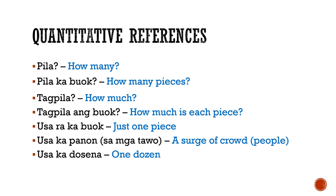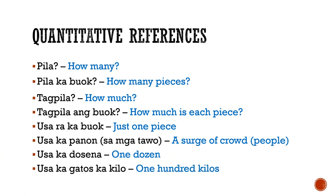'Usaka dosena' — usa is one, and dozen is simply translated to dosena. 'Usaka gatos ka kilo' means one hundred kilos — gatos means hundred. You also hear libo, which means thousand — so usaka libo ka kilo means one thousand kilos.